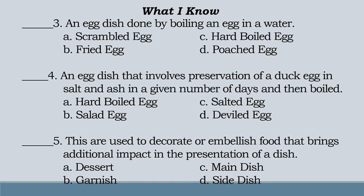Number five: this is used to decorate or embellish food that brings additional impact in the presentation of a dish. Letter A: Dessert. Letter B: Garnish. Letter C: Main dish. Letter D: Side dish.